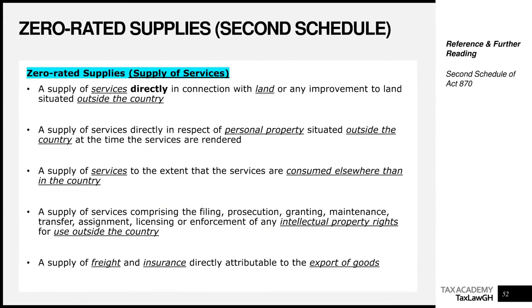Now, how about a supply of services? What must you comply with to get zero-rating treatment for a supply of services? A supply of services directly in connection with land or any improvement to land situated outside Ghana is a zero-rated supply. If you supply any service that has to do with land outside Ghana, that supply is deemed zero-rated, because the principle is that once the supply has a link to something outside Ghana, we try to zero-rate it.